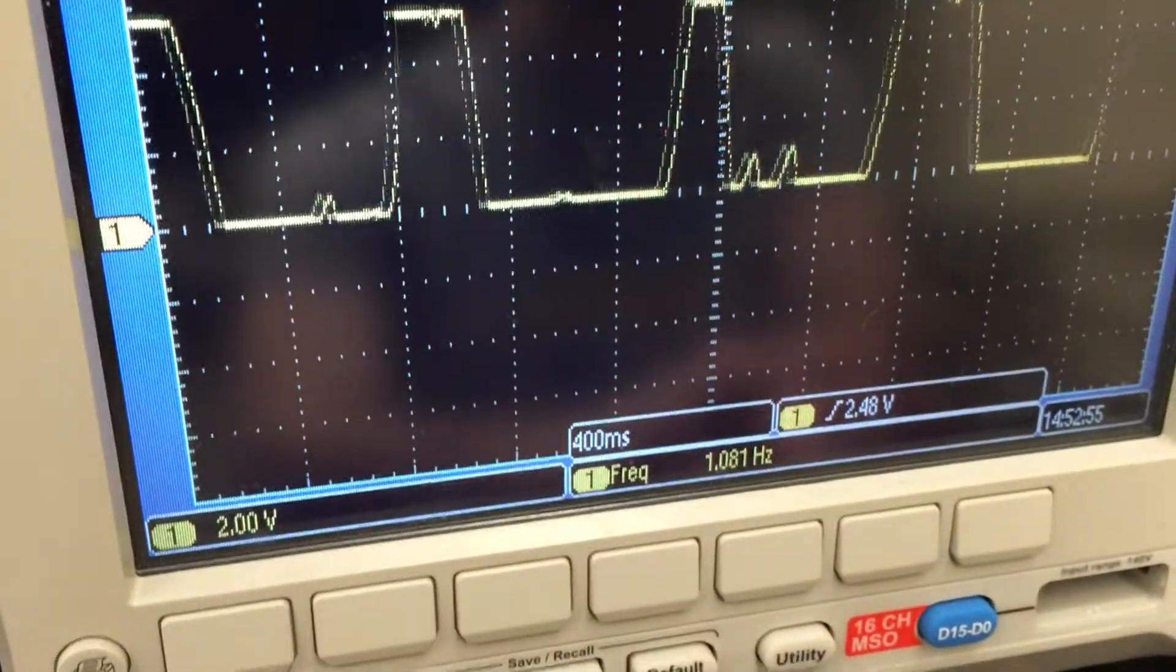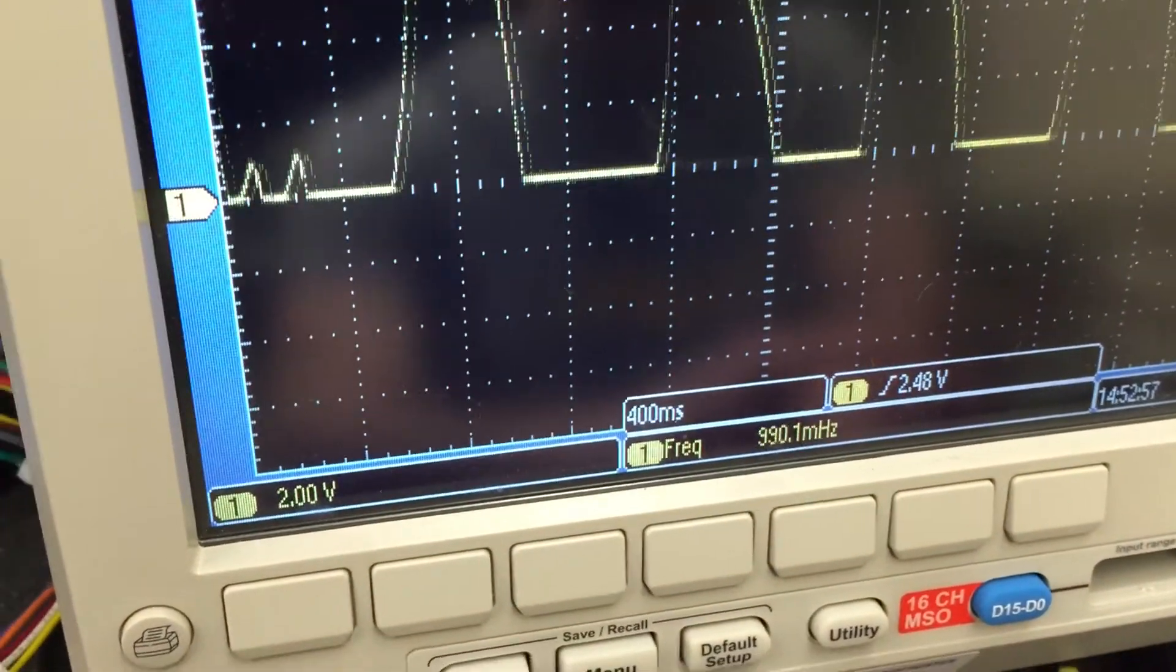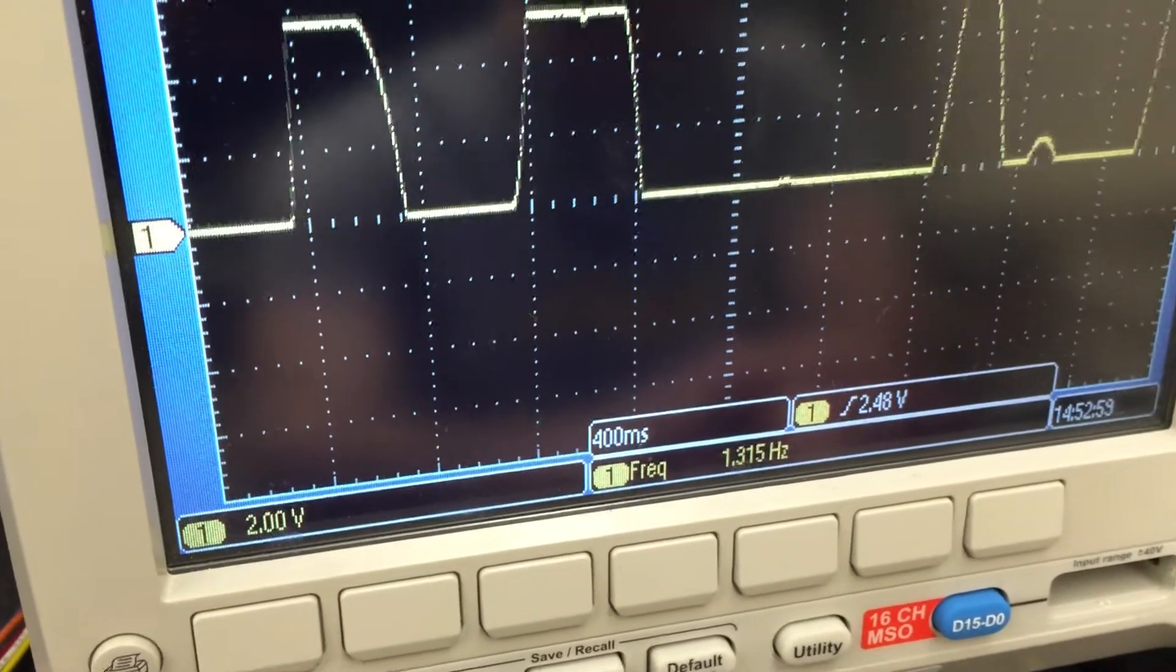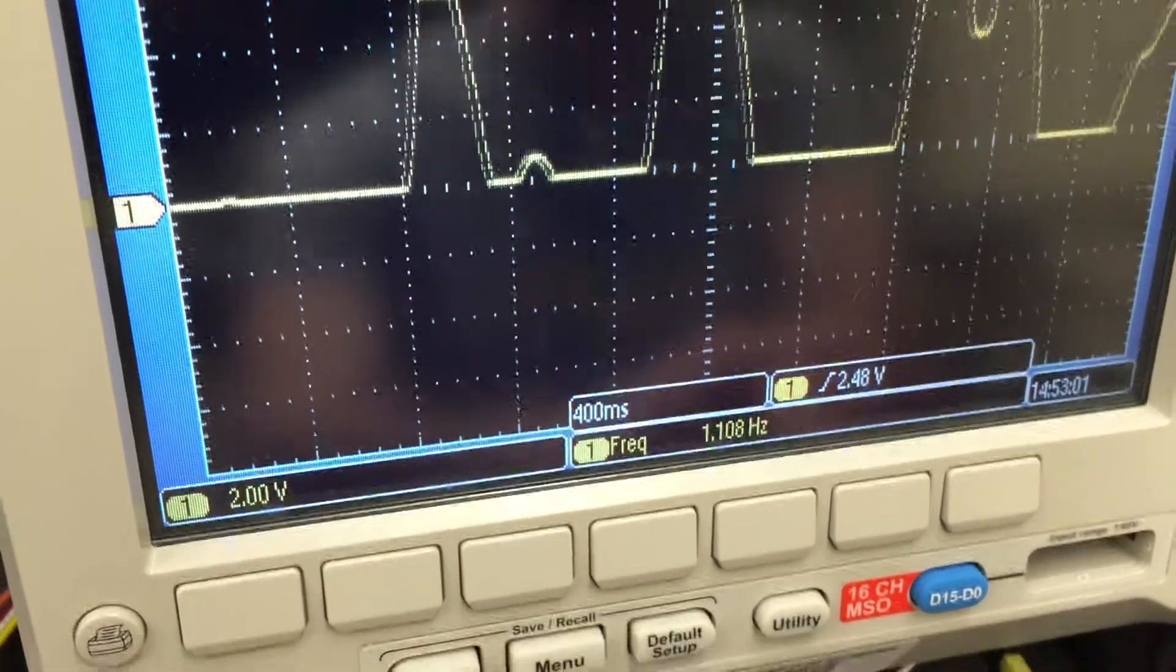And then if we go over here to the frequency oscilloscope, we can see about 1 Hz. So if you multiply that by 60, you get around 60 or so beats per minute.